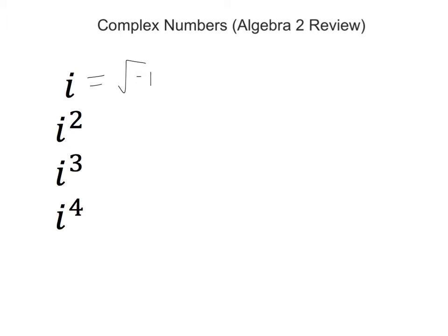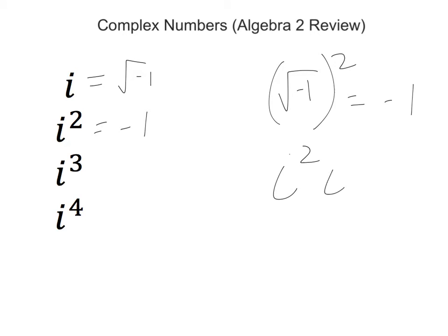When we square i, if you take the square root of negative 1 and you square it, that gives you just negative 1. So i squared is equal to negative 1. And when you think about i cubed, this could be described as i squared times another i, which would be negative 1 times i, and so it's just negative i.